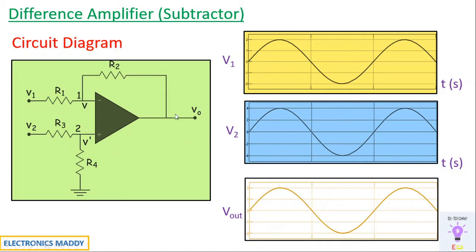If you're supplying V2 to be greater than V1, the output will again be the difference between the signals; however, it will not be inverted — it will be in phase with the input signals. This is the basic logic with respect to the difference amplifier simulation in MATLAB.